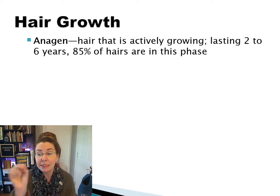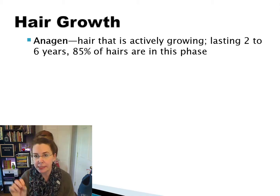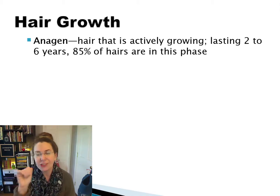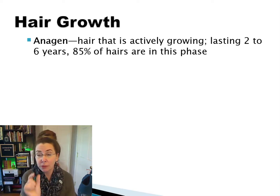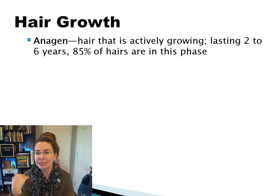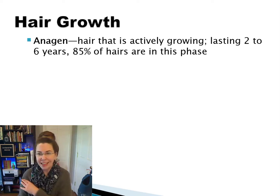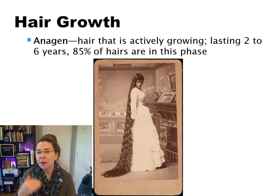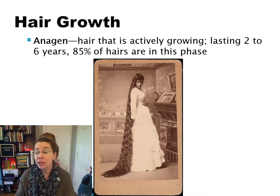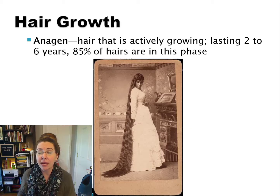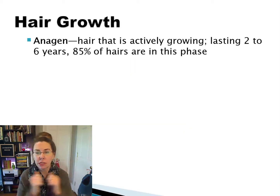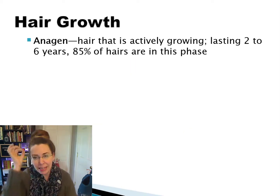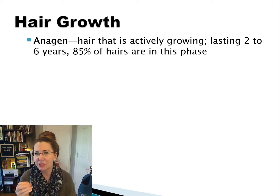Anagen, once again, is where we're actively growing. This usually lasts for two to six years, and that's also genetic. If you have a short hair growth cycle, your hair will never get terribly long. You might know somebody who just can't get their hair past their shoulders, or someone whose hair grows incredibly fast and is down past their butt — they have a longer growth cycle. At any given time, 85% of the hairs on your head are actively in anagen.